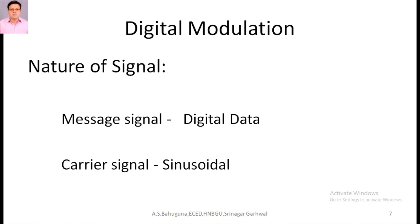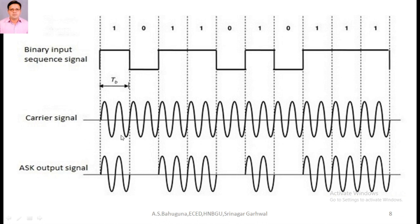Next, we have digital modulation. We have the nature of the signal, which can be two types: the message signal and the carrier signal. In the digital modulation case, the message signal data is digital, while in the analog modulation case, the data is analog. The carrier signal is sinusoidal in both cases. Some examples of digital modulation include ASK — amplitude shift keying.